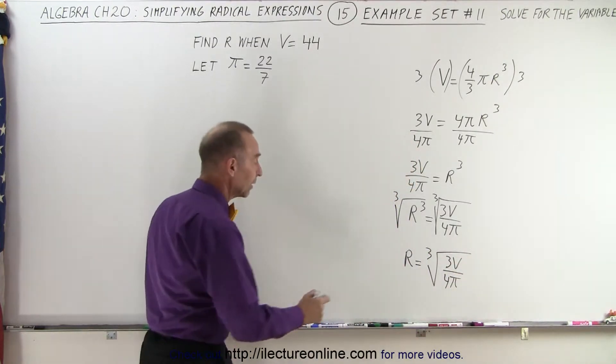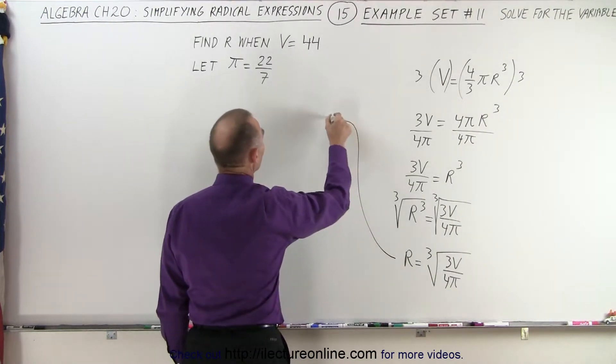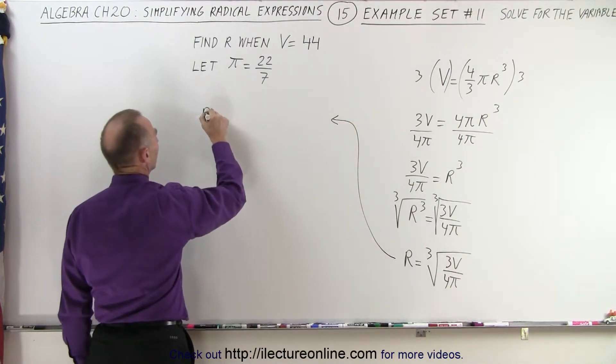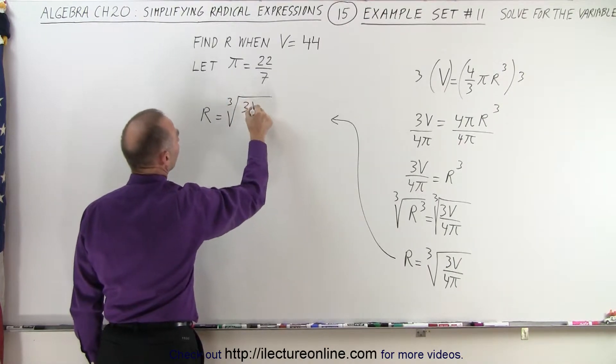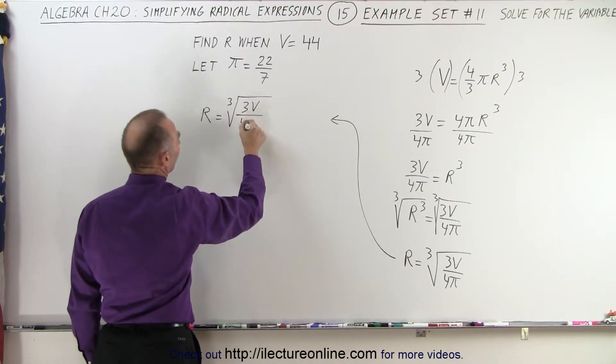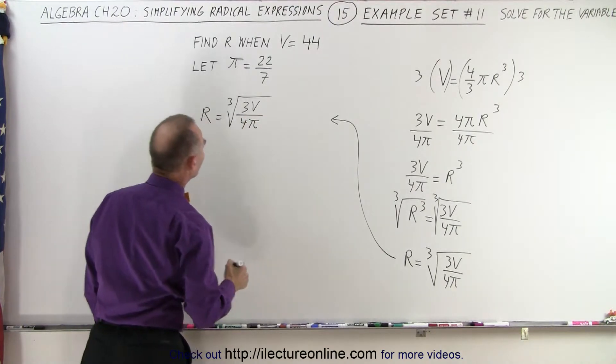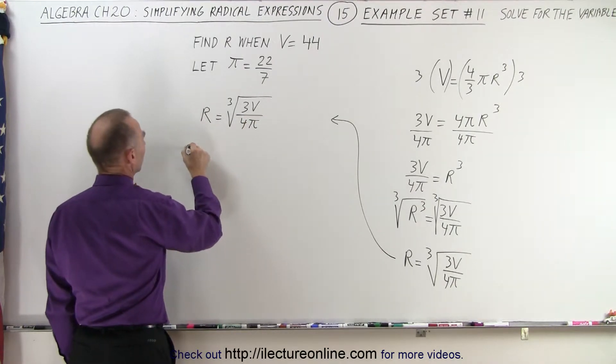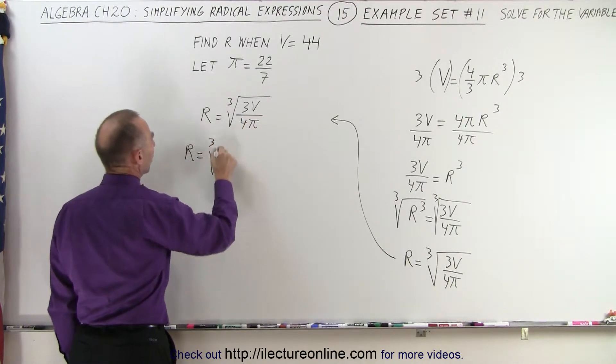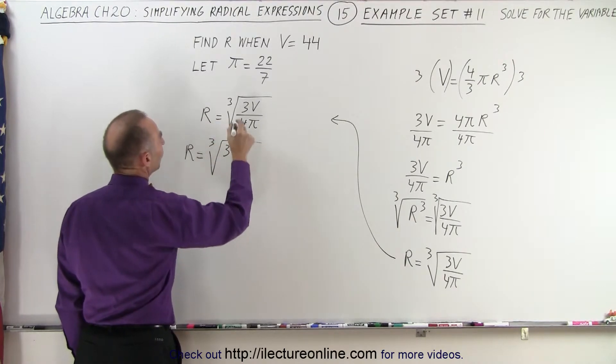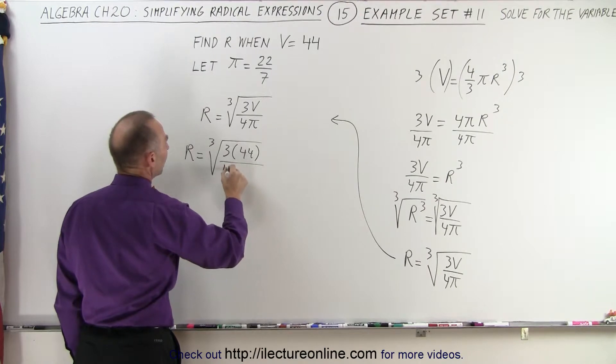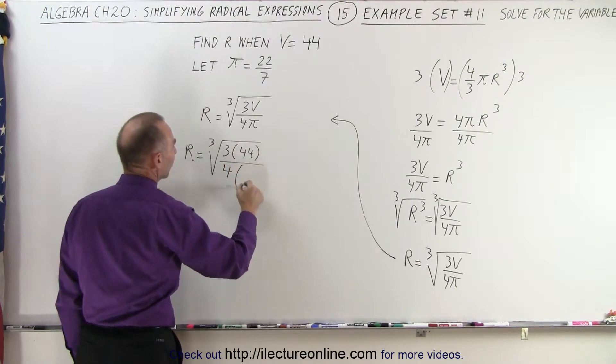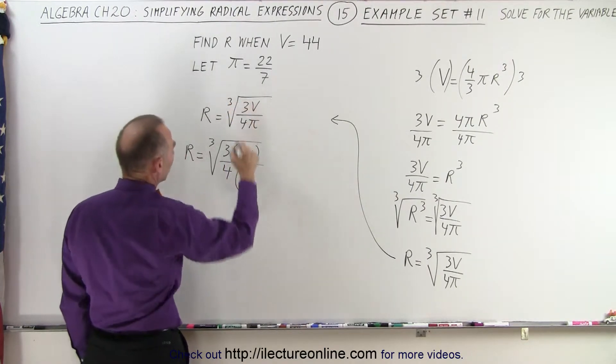Now, we have to plug in what those things are equal to to see what r is equal to. So we have, again, r is equal to the cube root of 3v divided by 4 pi. So let's plug in what these are equal to. So r is equal to the cube root of 3 times v, which is 44, divided by 4 times pi. And pi was to be taken as 22 over 7.